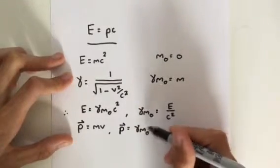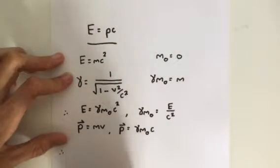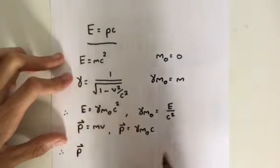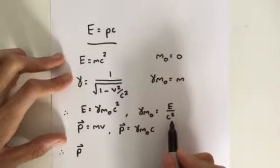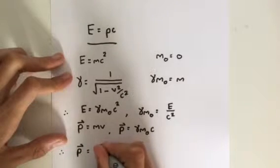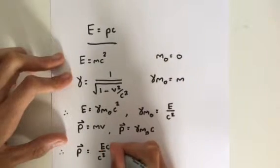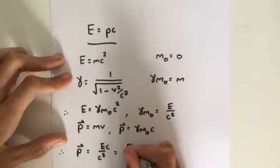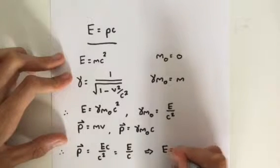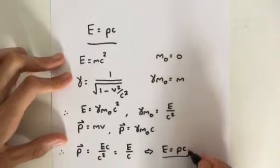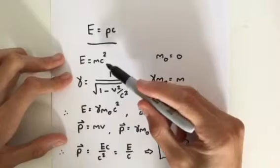So there's a slight correlation between this equation and the momentum. We can get that momentum, gamma M0, well gamma M0 is equal to E over C squared. Therefore, momentum must equal E over C squared times C. This cancels down to E divided by C. Therefore, we get that the energy is equal to P times C.